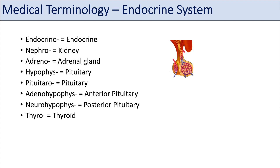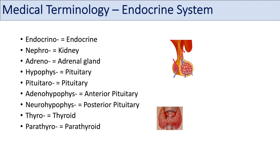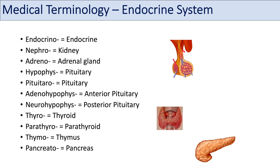Other prefixes you're going to hear often include thyro, relating to the thyroid gland — you can think of hypothyroidism or hyperthyroidism. Another prefix is parathyro, relating to the parathyroid glands, the four small glands behind the thyroid that release parathyroid hormone in calcium homeostasis. Another one is thymo, relating to the thymus. And pancreato relates to the pancreas — you can think of pancreatitis. Many of these organs release hormones in addition to performing their other functions.